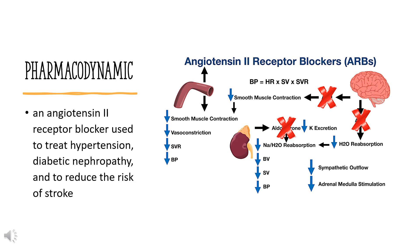Pharmacodynamics: Valsartan inhibits the pressor effects of angiotensin-2, with oral doses of 80 mg inhibiting the pressor effect by about 80% at peak, with approximately 30% inhibition persisting for 24 hours.